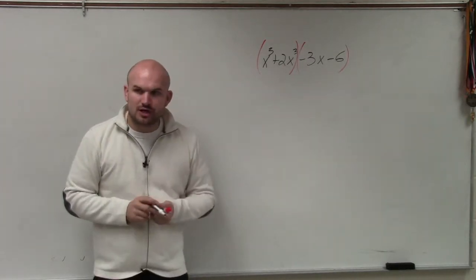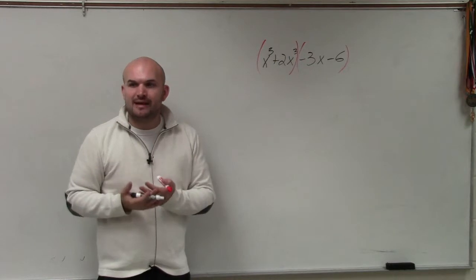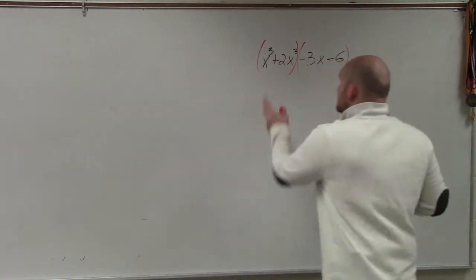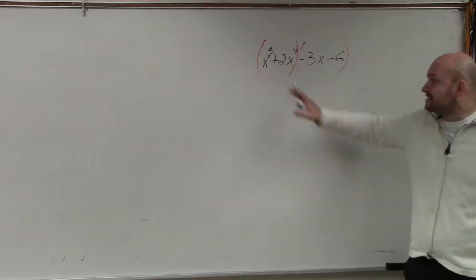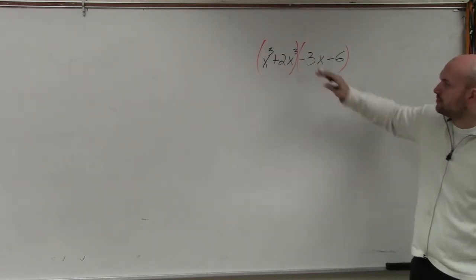Now, when we group the first two terms, what we're basically looking to do is factor out the GCF of each of these groupings. So I look at these, and I say, what do these have in common? What is their greatest common factor between x cubed and 2x squared?